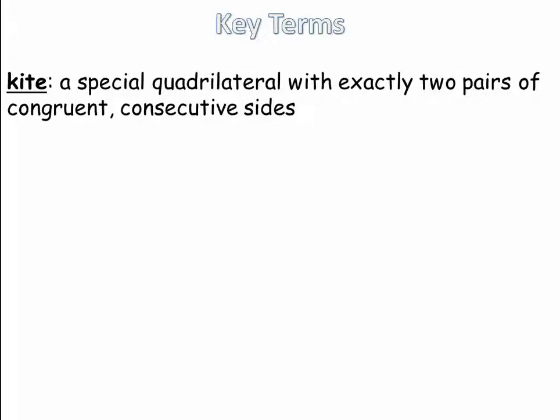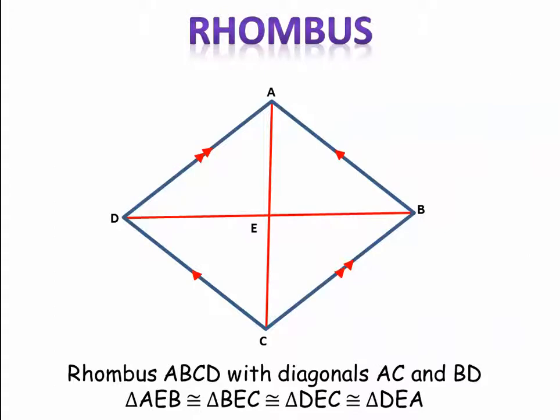A kite is a special quadrilateral with exactly two pairs of congruent consecutive sides. Let's go over just a couple of quadrilaterals. We have a rhombus. Recall that the diagonals of a parallelogram bisect one another. And since a rhombus is a parallelogram, the diagonals of a rhombus must bisect one another as well, so we end up having congruent segments.